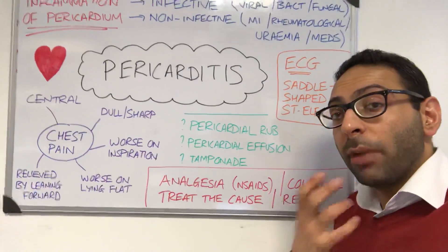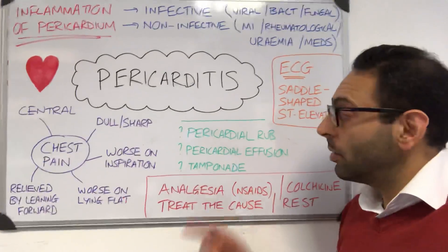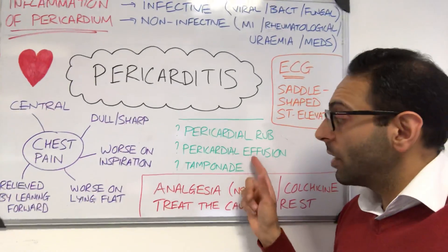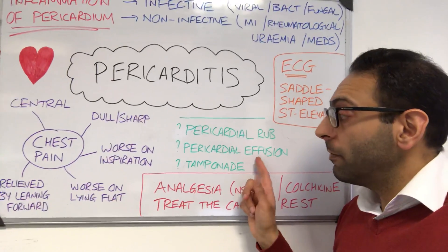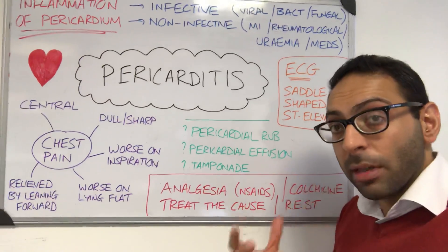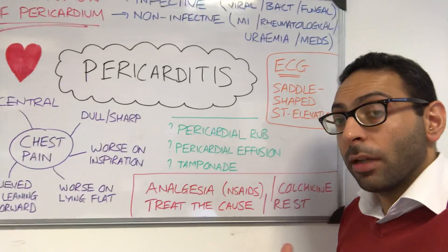When you examine someone, you look for signs of a pericardial rub, signs of a pericardial effusion, and also signs of tamponade, which may be present as well.